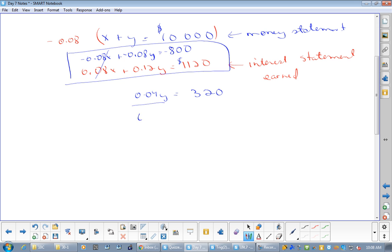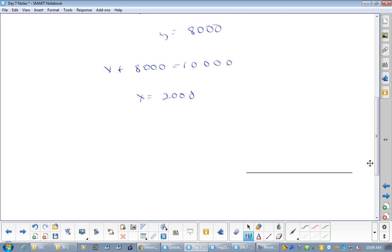Now, divide by 0.04. Y equals 8,000. Good, because that's right. Gotta love when a plan comes together. So, what is X just by, I mean, I don't know how much you gotta do, but X plus 8,000 equals 10,000. What does X equal? 2,000. So, this final statement is important. 2,000 was invested at 8% interest. And 8,000 was invested at 12%.